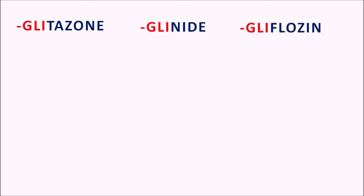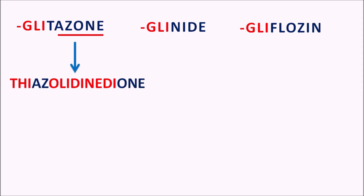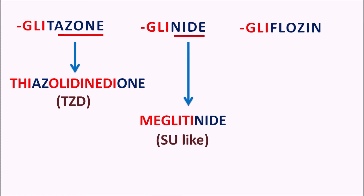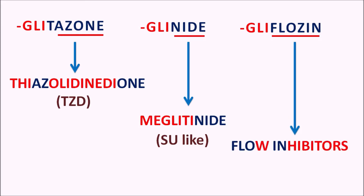There are three similar suffixes: GLITAZONE, GLINIDE, and GLIFLOZIN. In GLITAZONE, the term AZONE is derived from thiazolidinedione, so AZONE indicates they are thiazolidinediones (TZDs). In GLINIDE, the term NIDE is derived from meglitinide — these are sulfonylurea-like agents. The suffix GLIFLOZIN contains FLOZIN, which indicates flow inhibitors — drugs that inhibit the sodium-glucose transporter SGLT — thereby inhibiting glucose reabsorption so glucose is excreted in urine, helping control glucose levels and preventing cardiovascular complications.